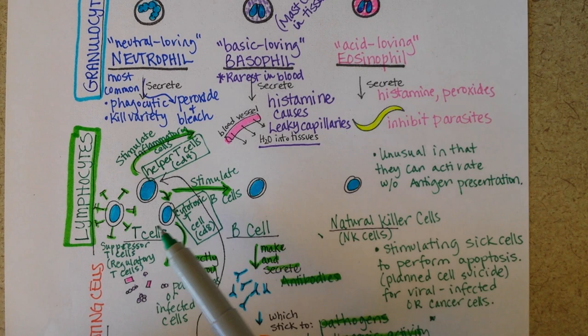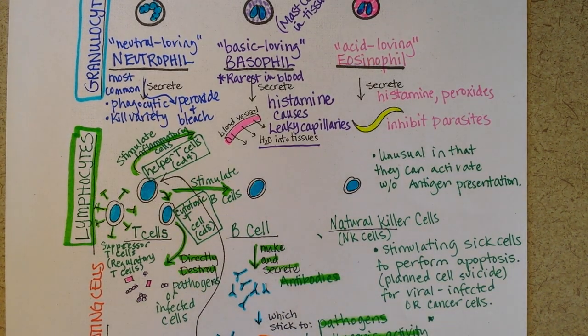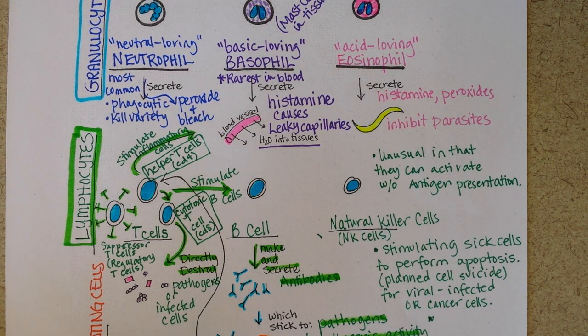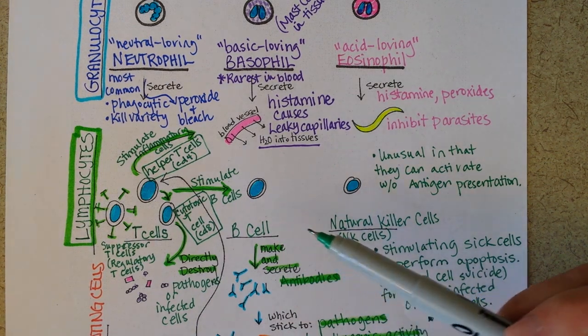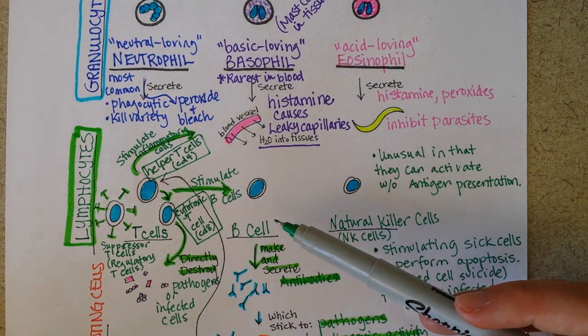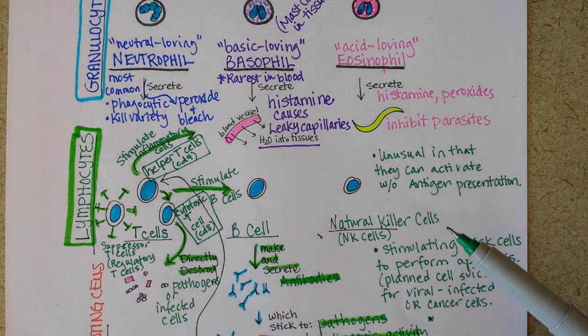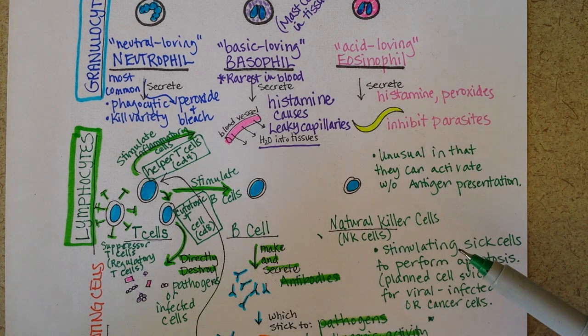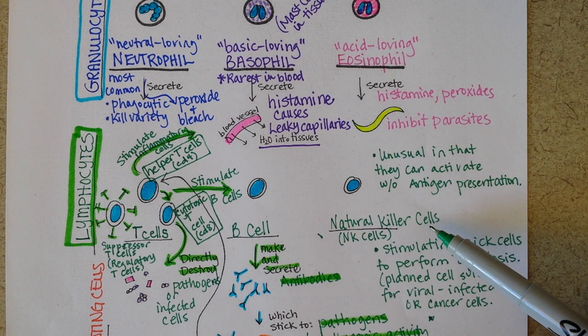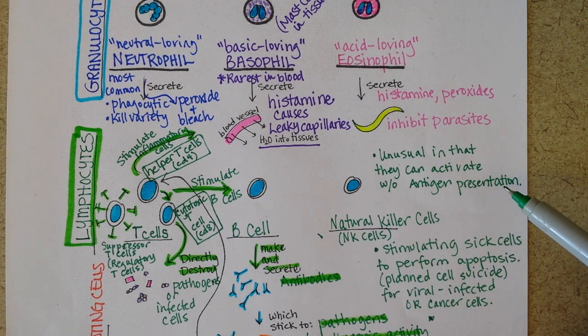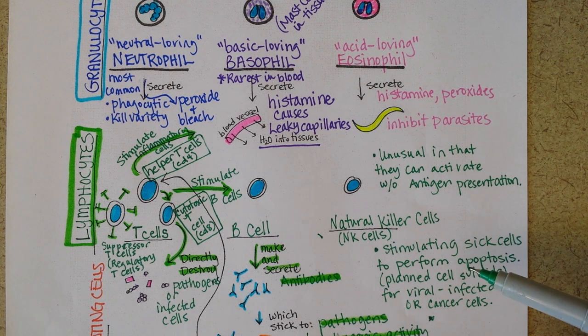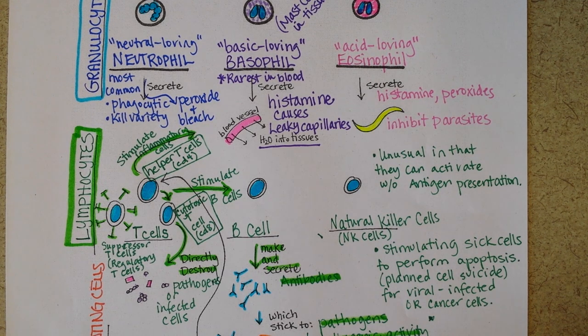So what I mean by that is that in order for a helper T cell to turn on, to become activated, it has to be presented with a piece of a pathogen, and the same for a B cell. Typically, the only way it's going to be activated is to be presented with a piece of an antigen, usually from a T cell being shown the antigen by the helper T cell that's been activated. Natural killer cells can actually come upon cells that are sick by viruses or that have cancer and potentially can activate against that cell without antigen presentation. So that's unusual.